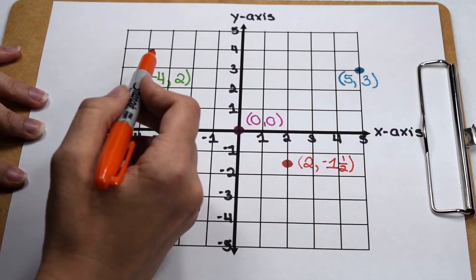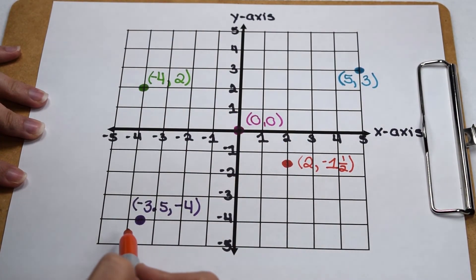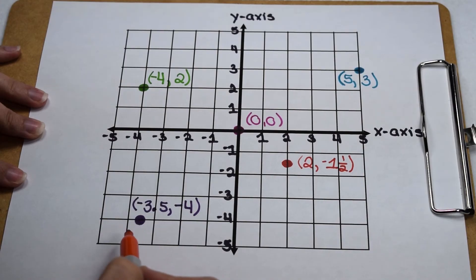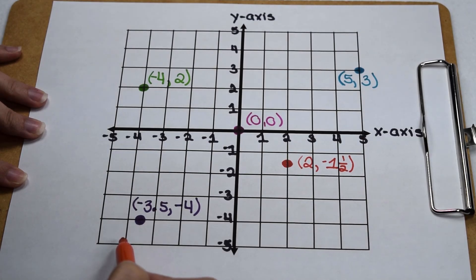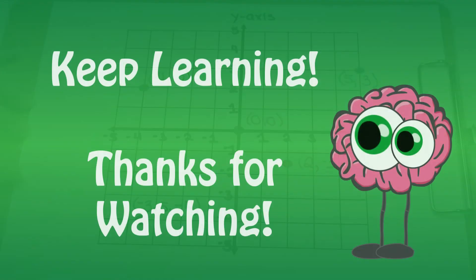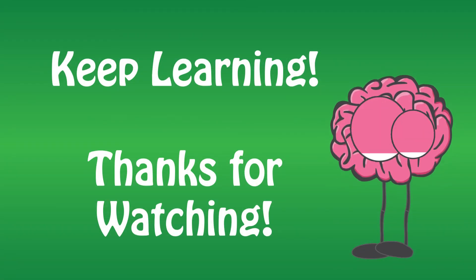So when working with four quadrants, we not only have to pay attention to how far we go on our x and y-axis, we also have to pay attention to direction so we can determine if our ordered pair needs positive or negative signs in it.